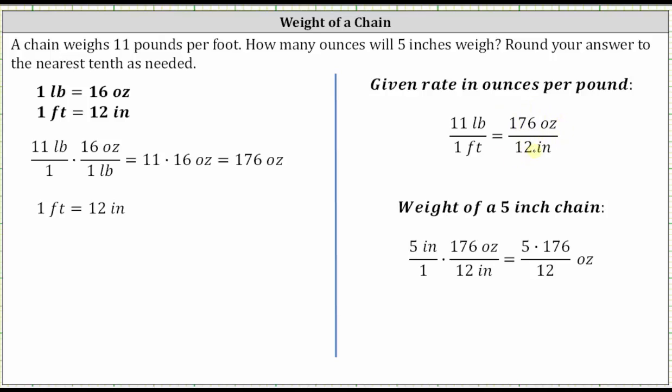We will use this rate to determine the weight in ounces of the five inch chain. We begin by writing five inches as a fraction with the denominator of one and then multiply by the rate of 176 ounces per 12 inches. Notice how we have inches in the numerator and denominator. When multiplying, inches simplify out, leaving us with ounces. We have the product of five and 176 divided by 12 ounces. And now we go to the calculator.